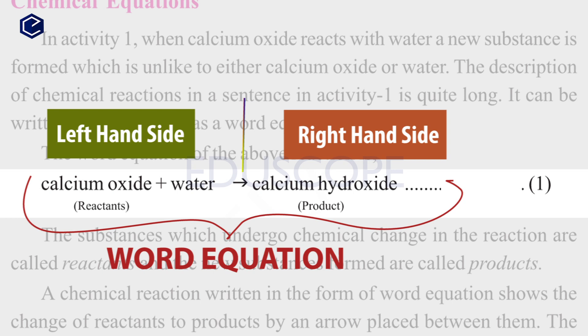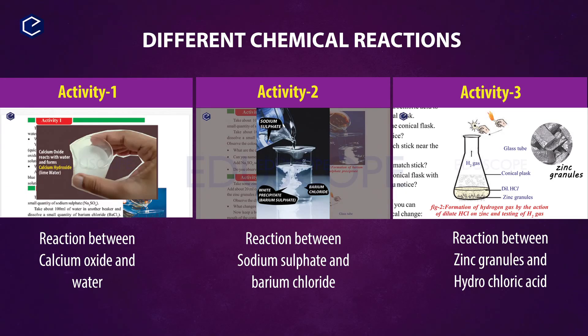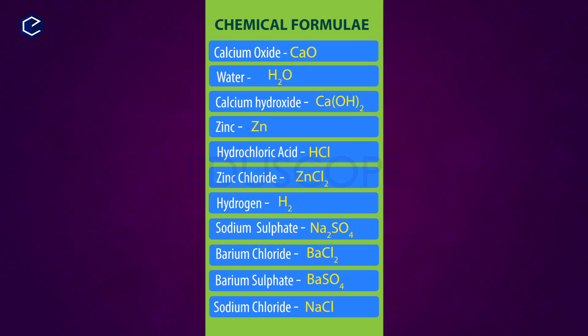But to write a chemical reaction in chemical equation form, instead of words, we should write the chemical formula or molecular formula of the chemical compounds. Let me show you with three chemical reactions and their chemical equations. For these three reactions, we need to know the chemical formulas of the different compounds involved. So let's look at a chart showing chemical formulas of some compounds. Now observe the first reaction.